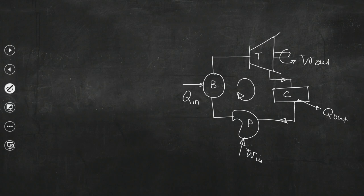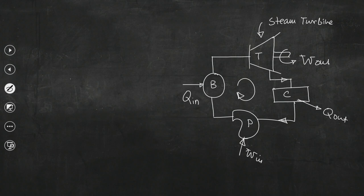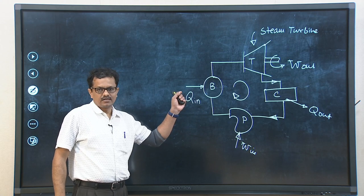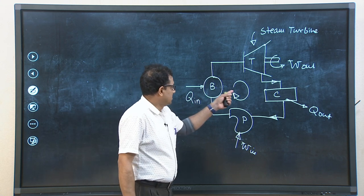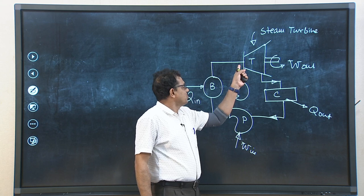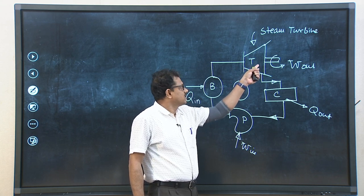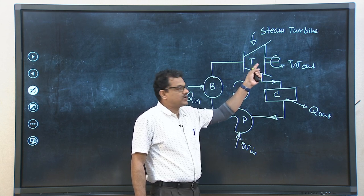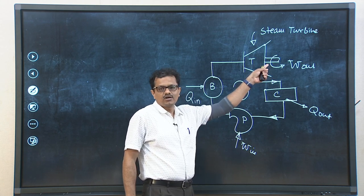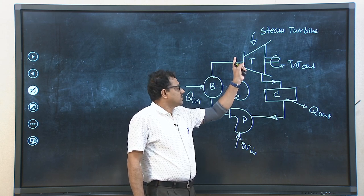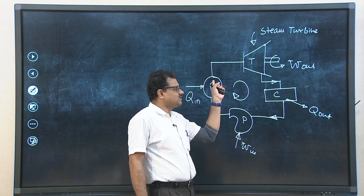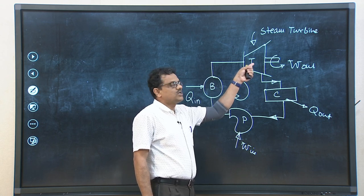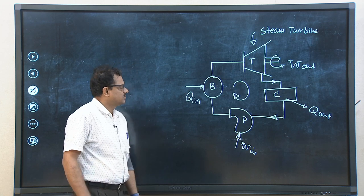The steam turbine is an important component of the steam power cycle. Steam passing through the turbine has the sole objective of rotating the turbine wheel, from where we get work output. Steam is not directly allowed to go into the turbine — let us discuss this aspect.